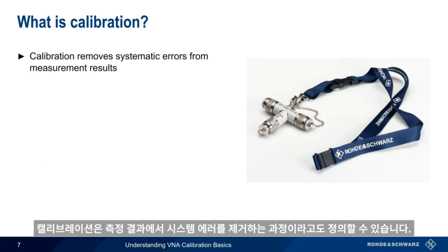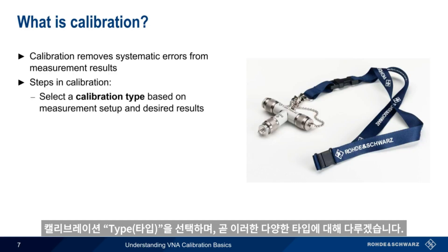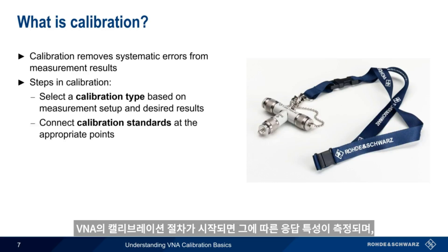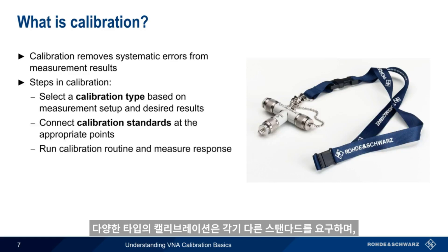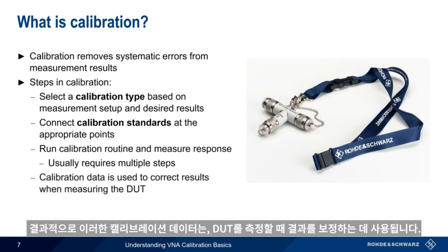Calibration can be defined as the process by which we remove systematic errors from our measurement results. In order to perform a calibration, we first select a type of calibration based on the measurement setup and desired results. There are numerous types of calibration, which we'll cover shortly. We then connect special devices, called calibration standards, to different points in our test setup, usually where the DUT or device under test will eventually be connected. The VNA calibration routine is started and the response is measured. Note that many types of calibration require different standards to be connected and disconnected multiple times and or in multiple places. The resulting calibration data is then used to correct our results when measuring the device under test.